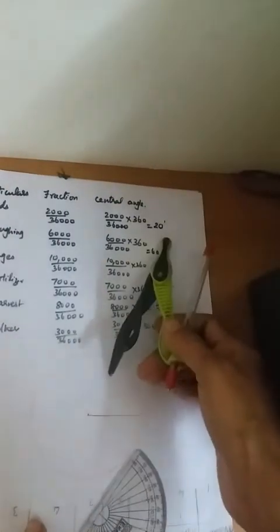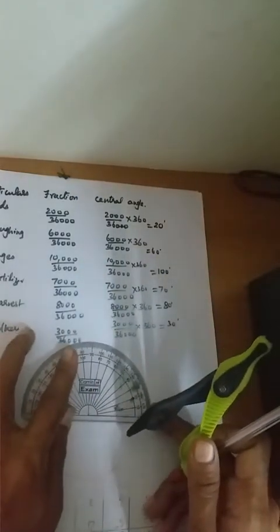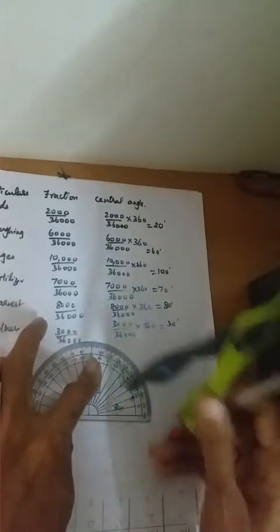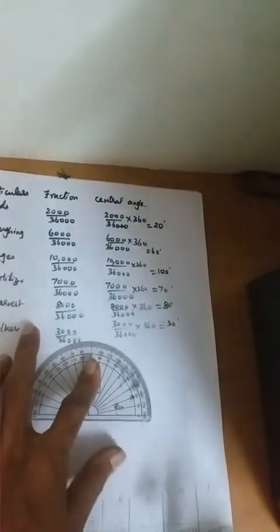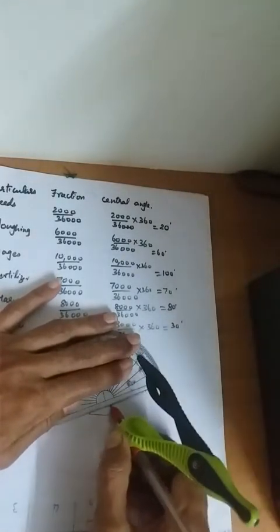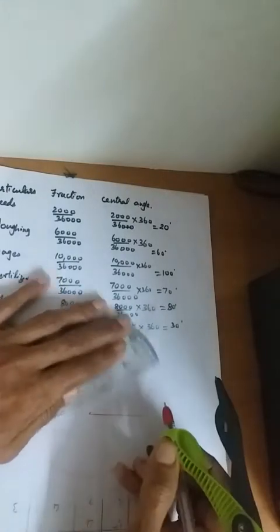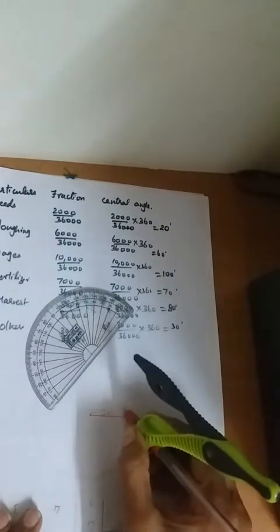The first angle is 20 degrees. Mark your 20 degree angle and join it — this is your 20 degree sector. The heading for this sector is 'Seeds', so write '20 degrees — Seeds'.